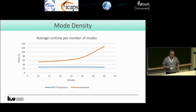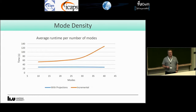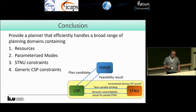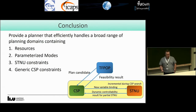We also looked at mode density — how many modes affect performance. We found this is problem specific, but in our case when all projections are added the CSP can filter out unwanted modes very quickly and runs fast. In conclusion, we provide a planner that efficiently handles domains with resources, parameterized modes, and STNU constraints. Since a CSP is integrated, you could add any type of constraints to the domain, though CSPs can be quite tough to solve. The final system has three major components: TFPOP, CSP, and STNU, passing information around between them.